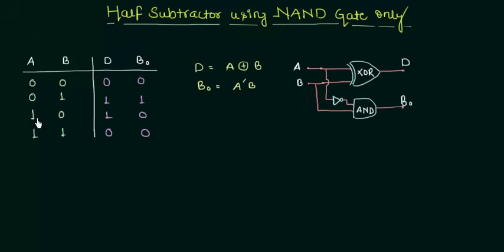Then 1 subtracted from 1. I am having the difference 1 and there is no borrow required. So borrow is 0. And 1-1 very simple. Difference is 0 as well as the borrow is 0.